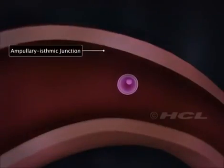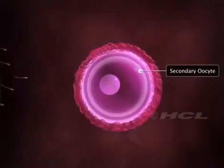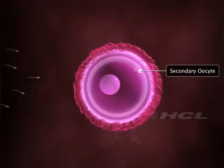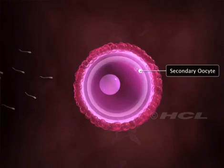When a sperm meets the ovum, the ovum is in the secondary oocyte stage. It has not yet completed its second meiotic division.